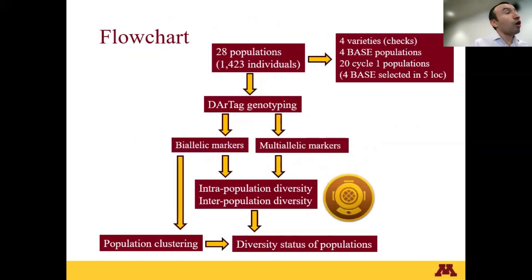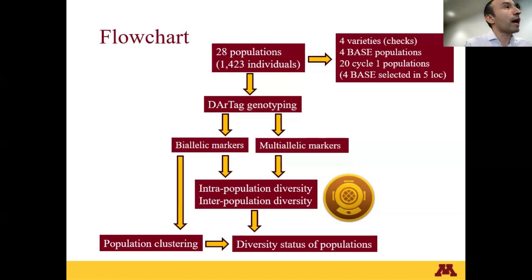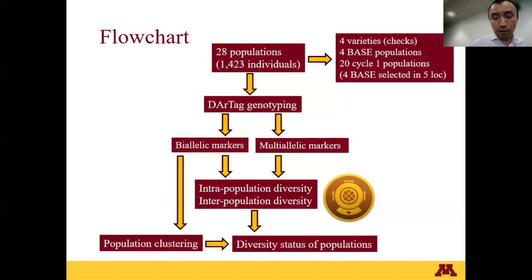The flowchart of this work can be summarized as follows. We have 28 different populations with 1,423 individuals. The 28 populations can be split into four check varieties used as controls, four base populations, and 20 cycle one populations corresponding to four base populations across five different locations. The individuals were genotyped using DArTag sequencing, from which we retrieved allelic markers. With allelic markers, we measured intrapopulation and interpopulation diversity using genotype data, and additionally we identified population structure using principal component analysis and discriminant analysis.